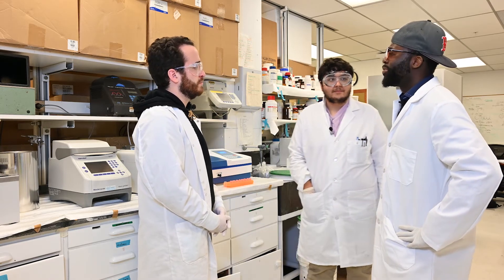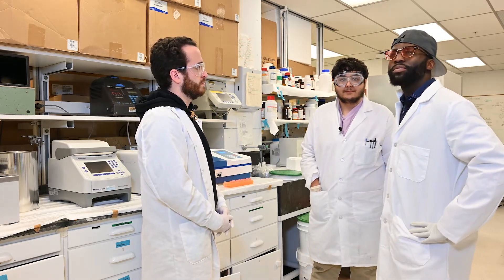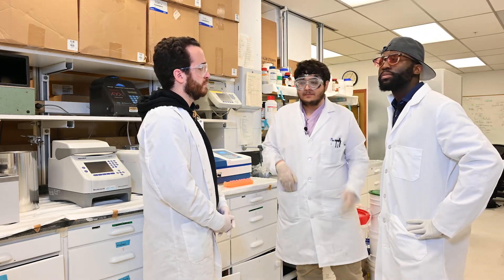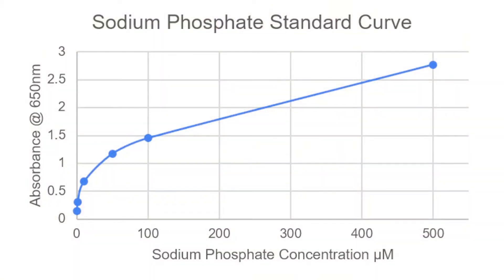Once we get our values, how do we make the graphs? To make the graph, all we need to do is plot our recorded absorbance values on the y-axis, and on the x-axis record the concentrations of the known phosphate standards.